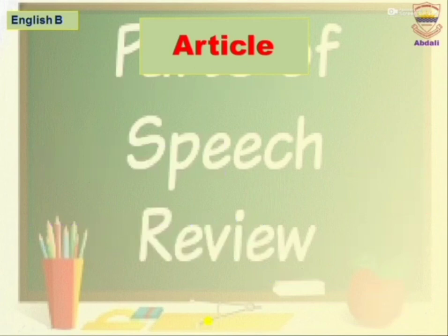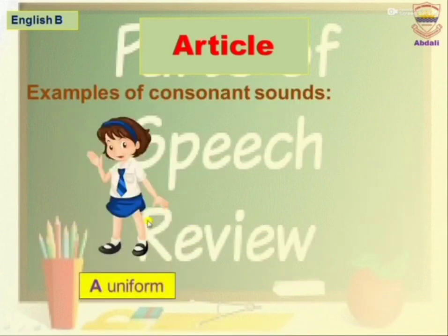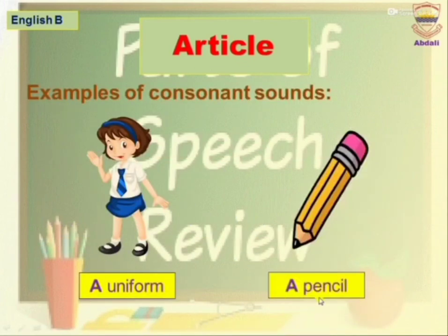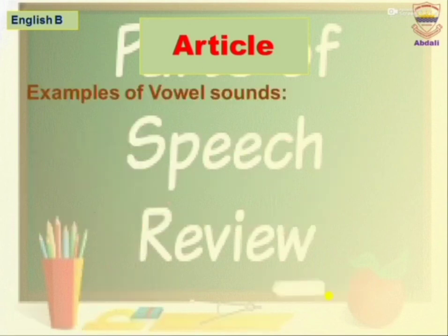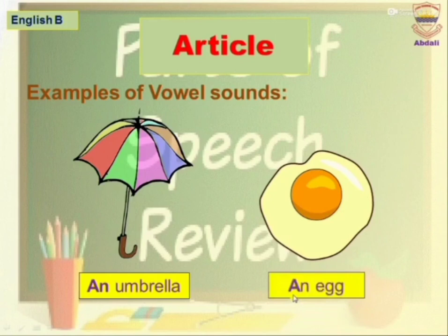Examples of consonant sounds: a uniform — we use A with uniform; a pencil — we use A with pencil. Examples of vowel sounds: an umbrella — we use An with umbrella; an egg — we use An with egg.